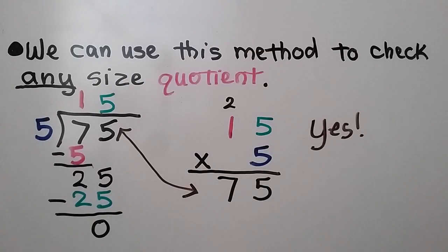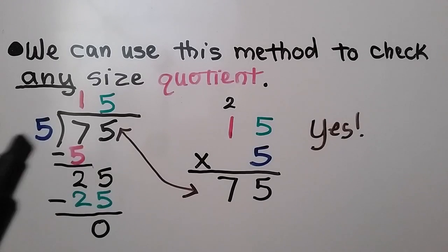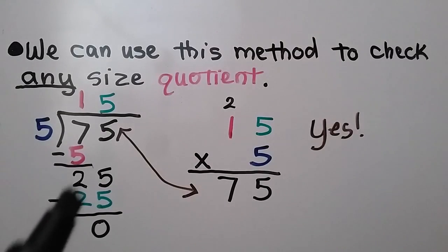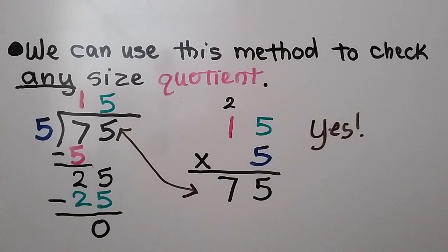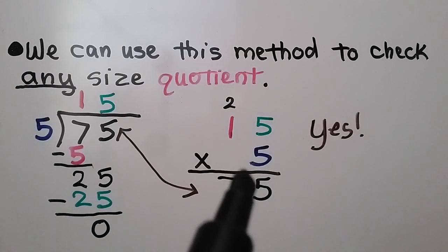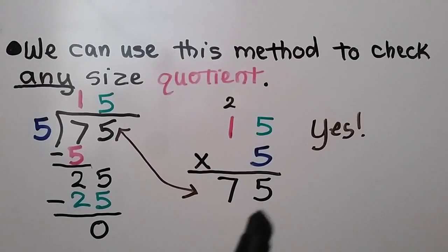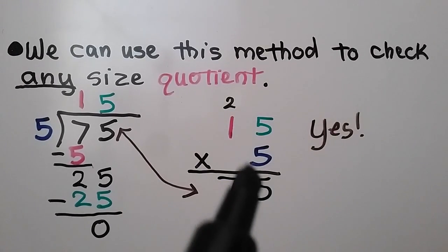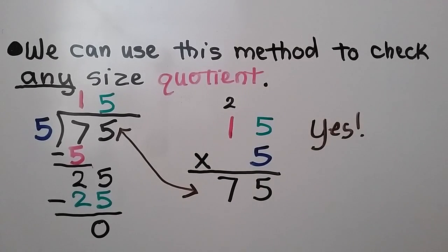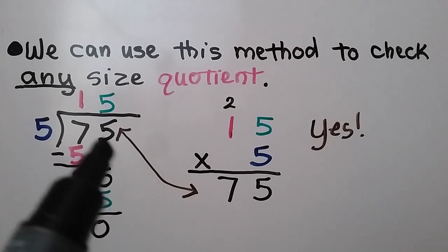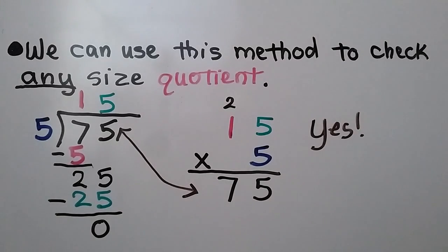We can use this method to check any size quotient. Here we have 75 divided by 5, and we did our division and found that the quotient was 15. To find out if we're right, we do 15 times 5 — the quotient times the divisor. We do 5 times 5 is 25, regroup the two tens and put the 5 ones down. Then 5 times 1 is 5, plus the 2 we regrouped, is 7. We get 75 for our product, the same as our dividend. We know we did it correctly.